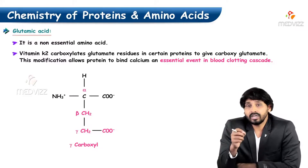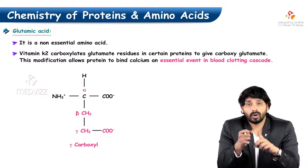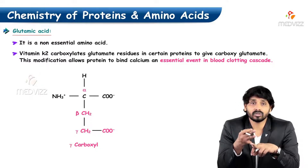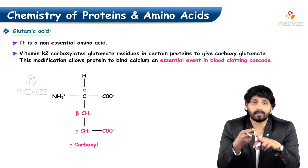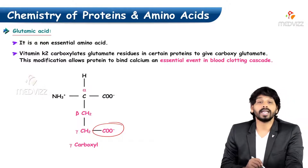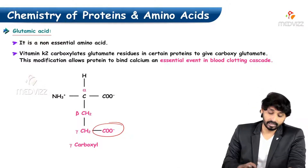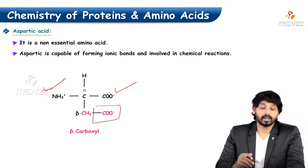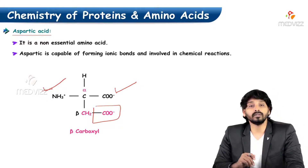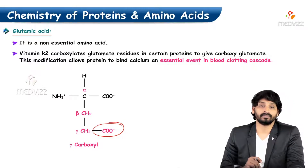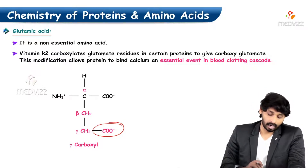For coagulation you require Vitamin K and calcium, and for this association we require glutamic acid. Looking at the structure, there is again an extra carboxylic group — in the case of aspartic acid it is at the beta position, while in glutamic acid the extra carboxylic group is at the gamma carbon.